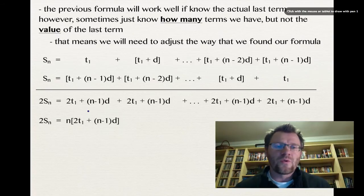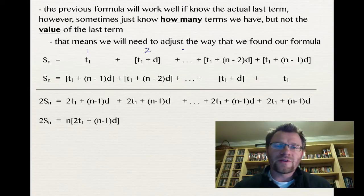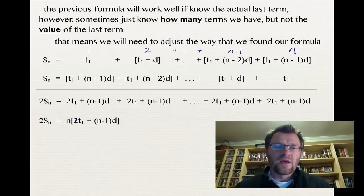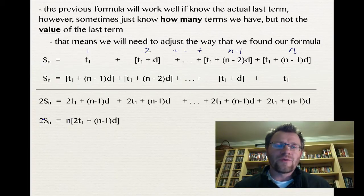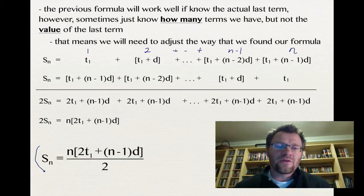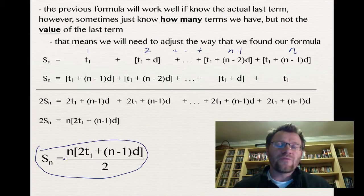Since there are N terms, we have 2SN = N × [2T1 + (N−1)D]. Solving for SN gives our second formula: SN = N × [2T1 + (N−1)D] / 2.